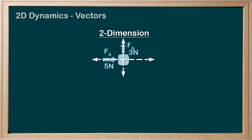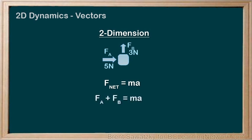Our free body diagram is a little bit different: FA equals 5 newtons right, and FB equals 3 newtons up. Again, Fnet equals MA — always a good way to start a dynamics problem — where Fnet is the addition of our forces, FA plus FB in this case. We may have to stop and remember that this is a vector addition, and in a 2D problem like this, we need to represent the direction aspects of the vectors a bit differently, not just positives and negatives like in a 1D problem.